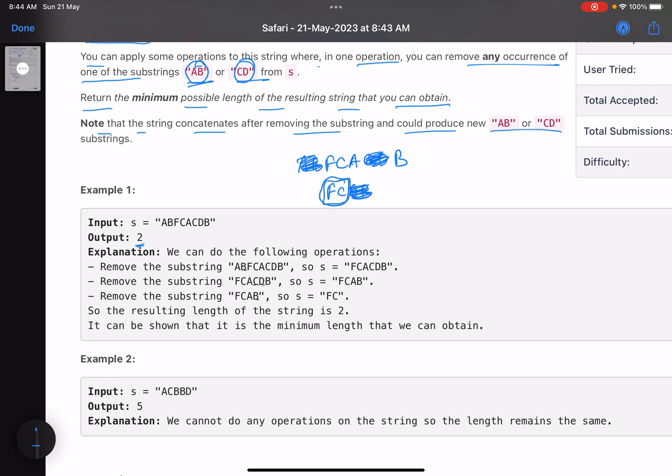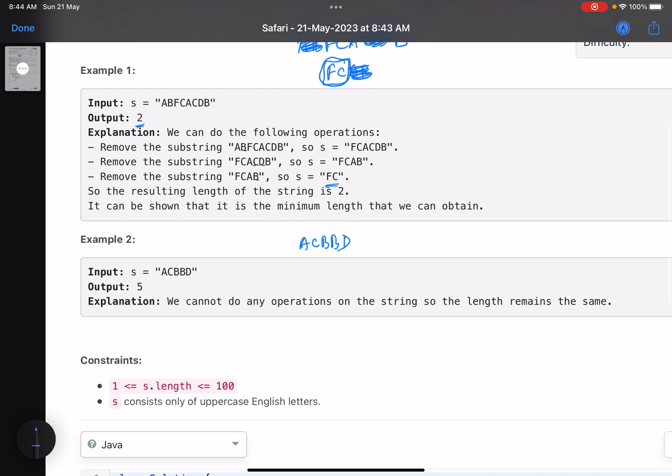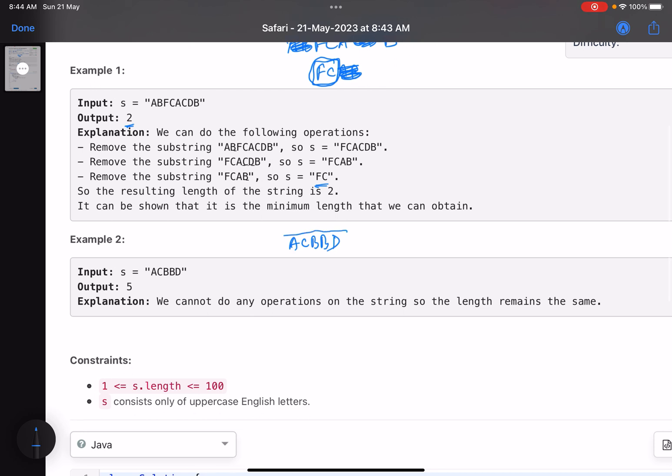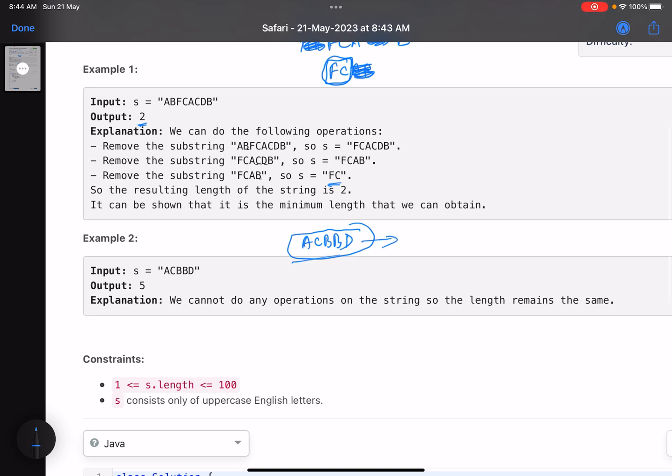You can see FC is remaining. Let's see this one: ACBBD. So there is no AB or CD, hence you cannot remove even a single combination. Since there is no operation, you'll return the length of the string and that is 5.